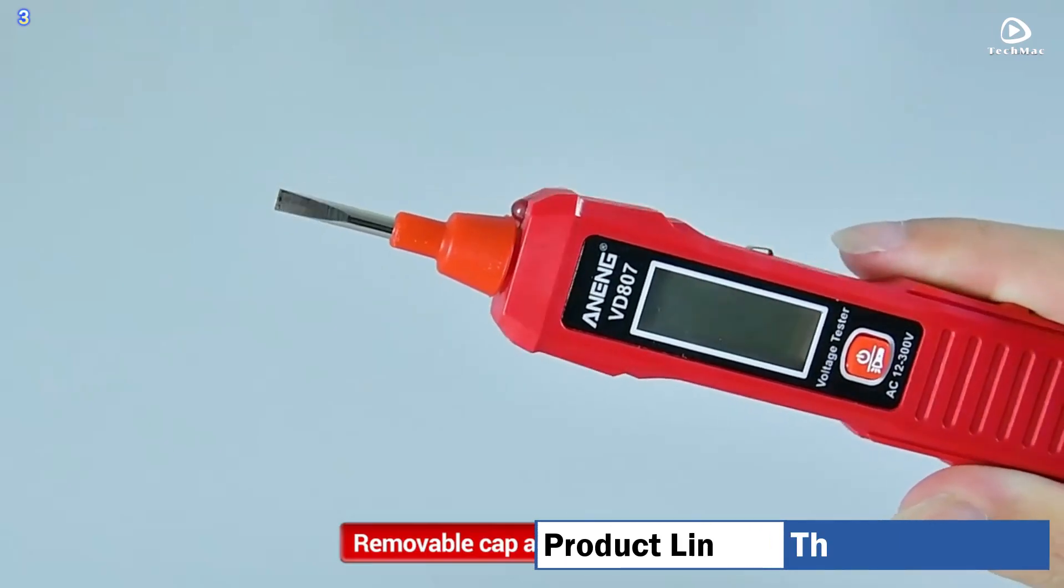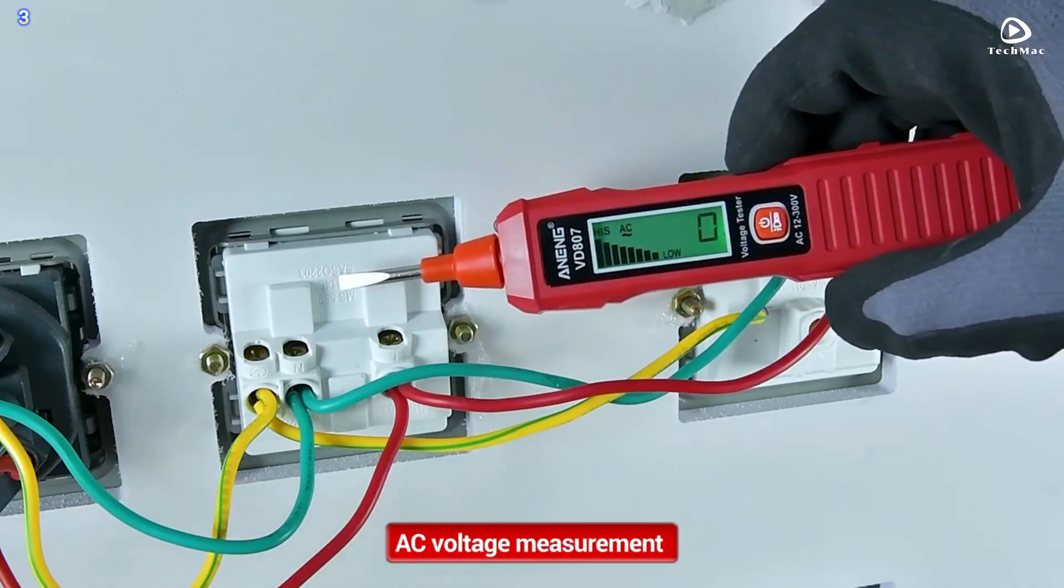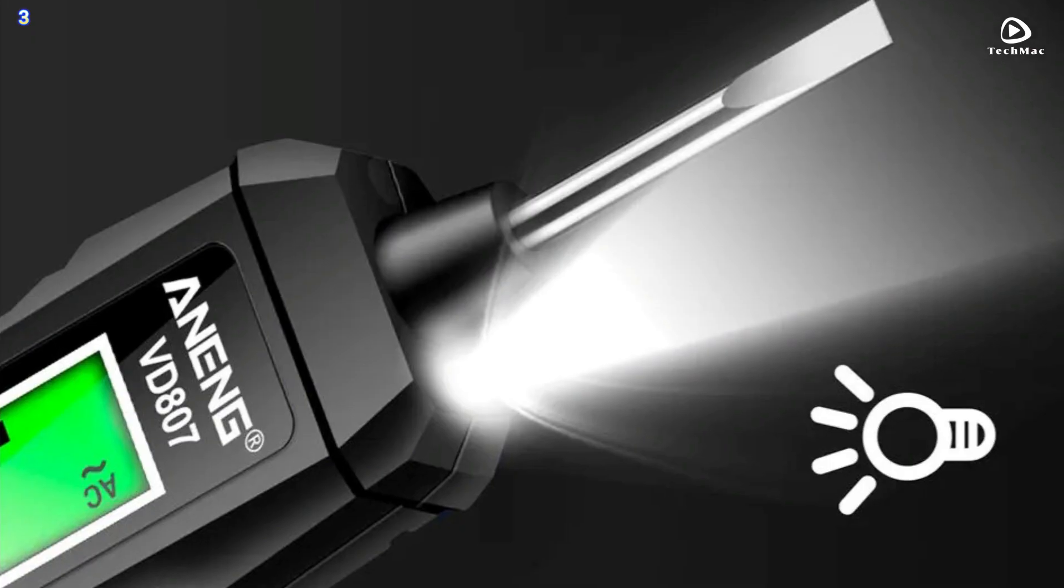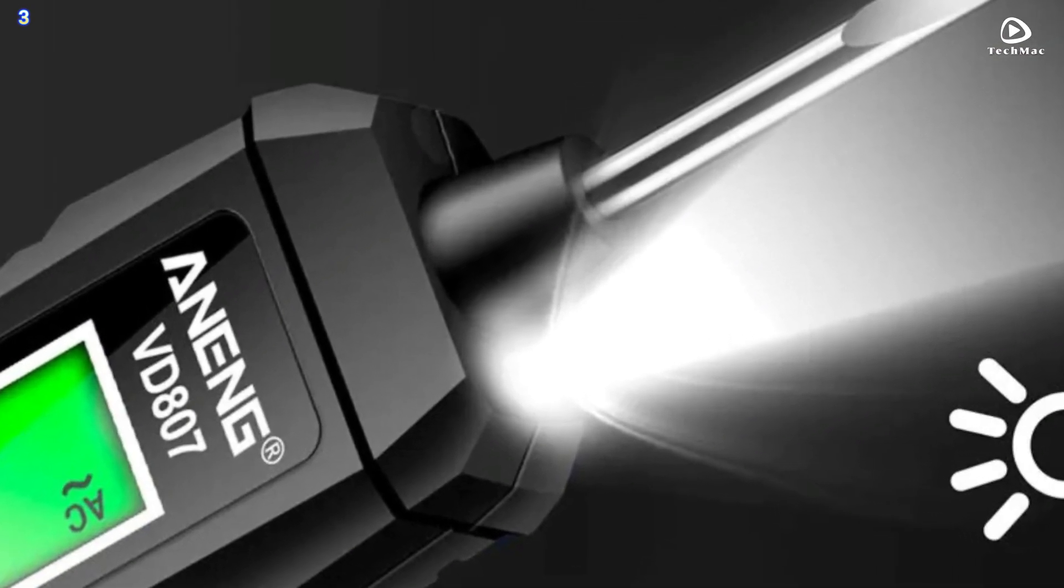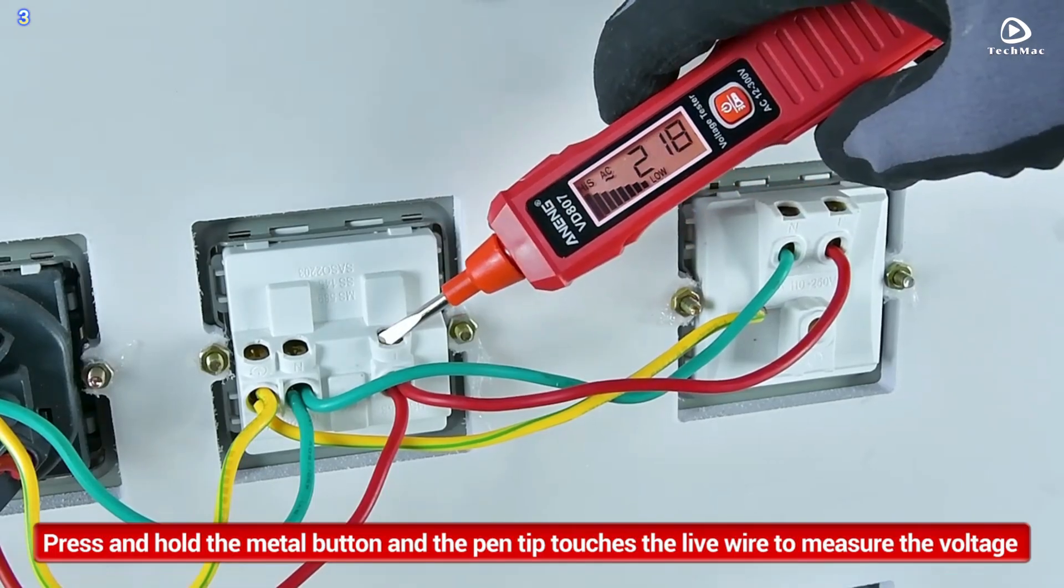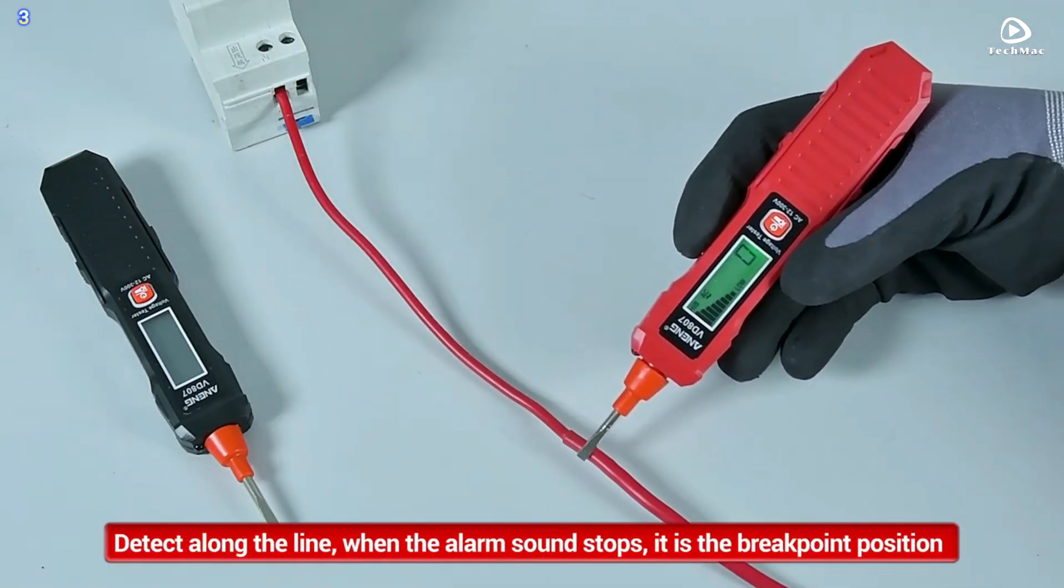Safety is paramount, and the Anning VD807 is designed with that in mind. It features non-contact voltage detection, which means you can get accurate readings without risking contact with live wires. Plus, it has a built-in flashlight for those hard-to-see areas.